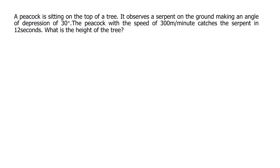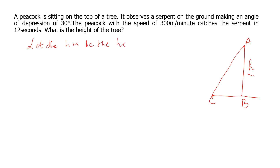This is another important question which normally comes in the exam. A peacock is sitting on the top of a tree and observes a serpent on the ground. The peacock, with a speed of 300 meters per minute, catches the serpent in 12 seconds. We need to find the height of the tree. We name the points A, B, and C, where AB is the height of the tree taken as h meters.